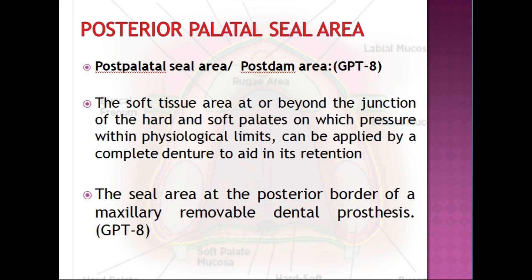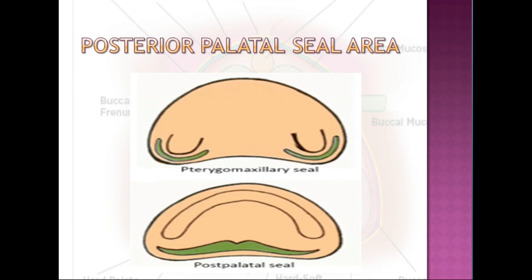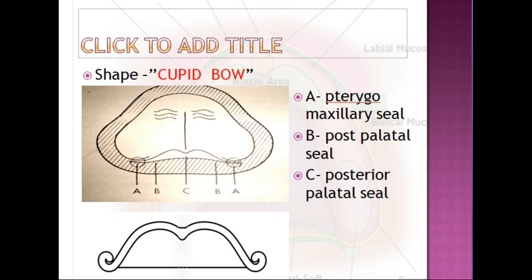The last limiting structure is the posterior palatal seal area, also called the post-dam area. It is a soft tissue area at or beyond the junction of the hard and soft palates on which pressure within physiological limits can be applied by a complete denture to aid in its retention. The posterior palatal seal area has two components: the pterygomaxillary seal and the post-palatal seal. The shape of this area is similar to a cupid's bow.